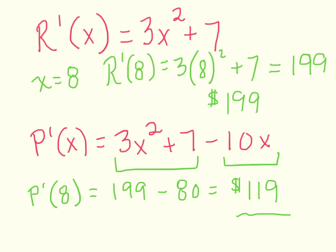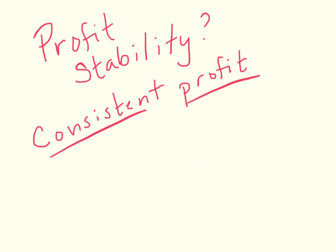For these examples I have worked them out by hand, but certainly Excel could be used to find any of these values. The next thing to consider is profit stability — where is there a consistent profit? For this idea, we are going to use Excel and set up a simple spreadsheet to help us look for that value or those values where we have profit stability.